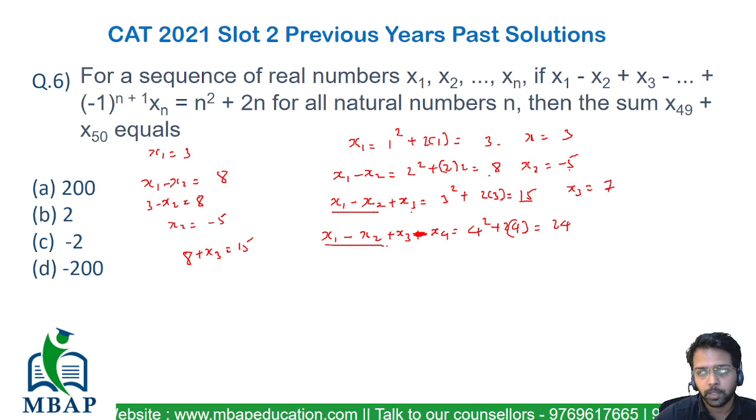Now x1 minus x2 plus x3 if you add with x4 is now becoming 24 which says 15 minus x4 should be equivalent to 24. So what will be x4? x4 will be equivalent to 15 minus 24 which is basically minus 9. So you got x4 to be as minus 9.